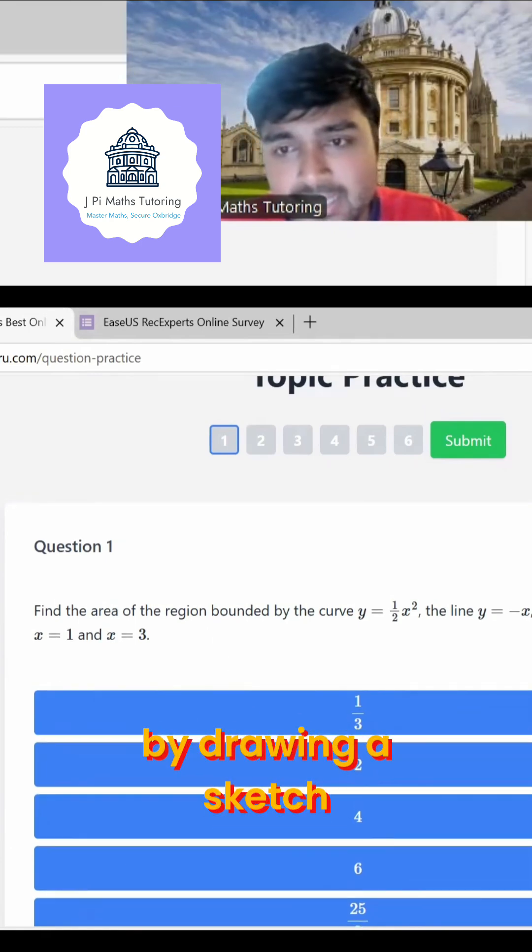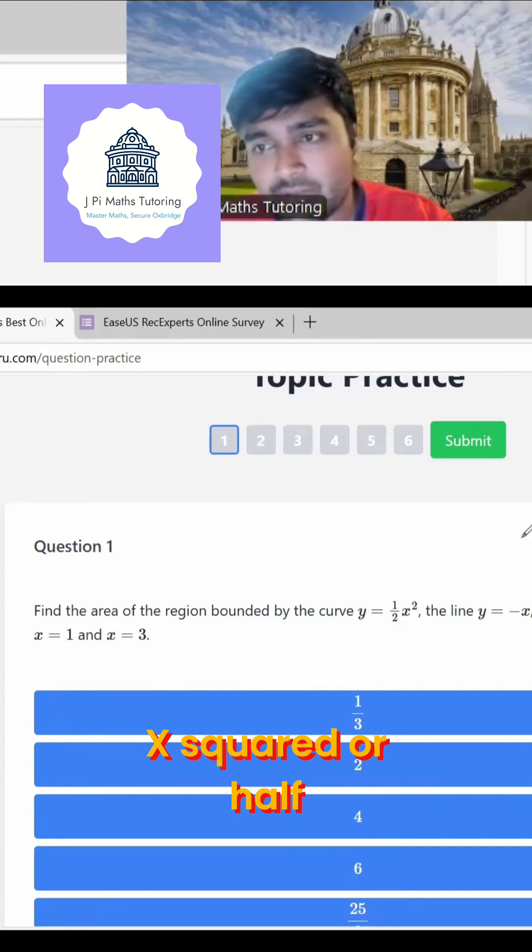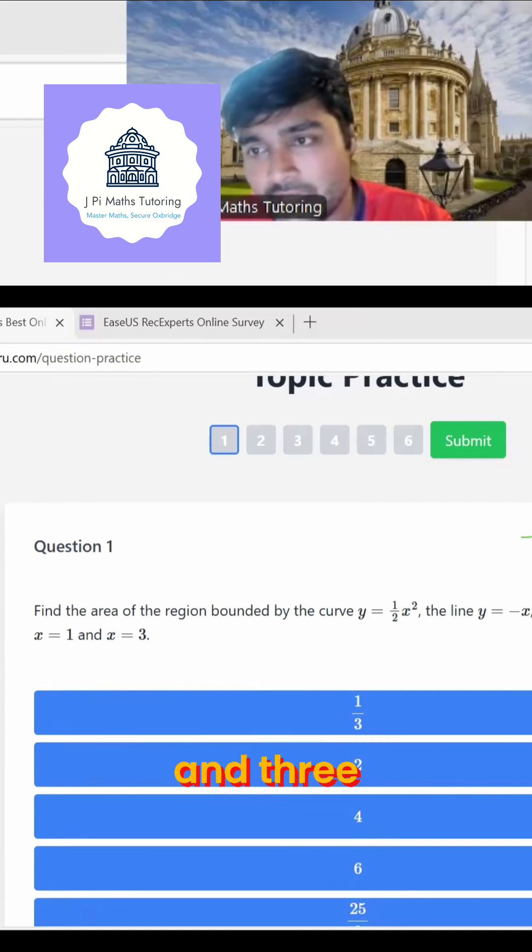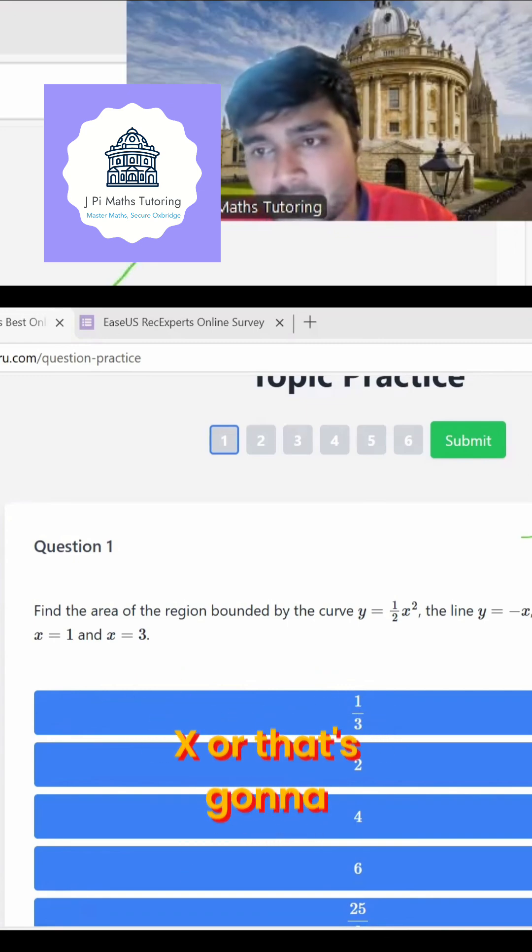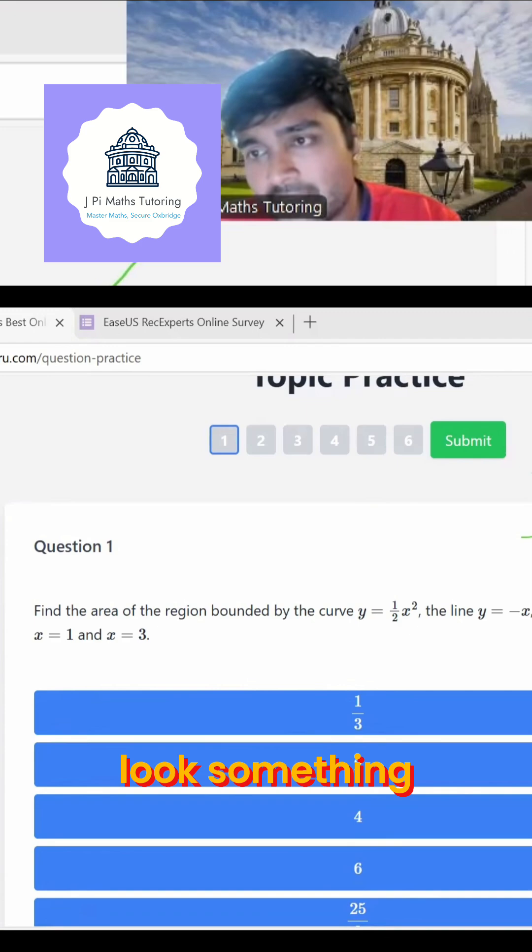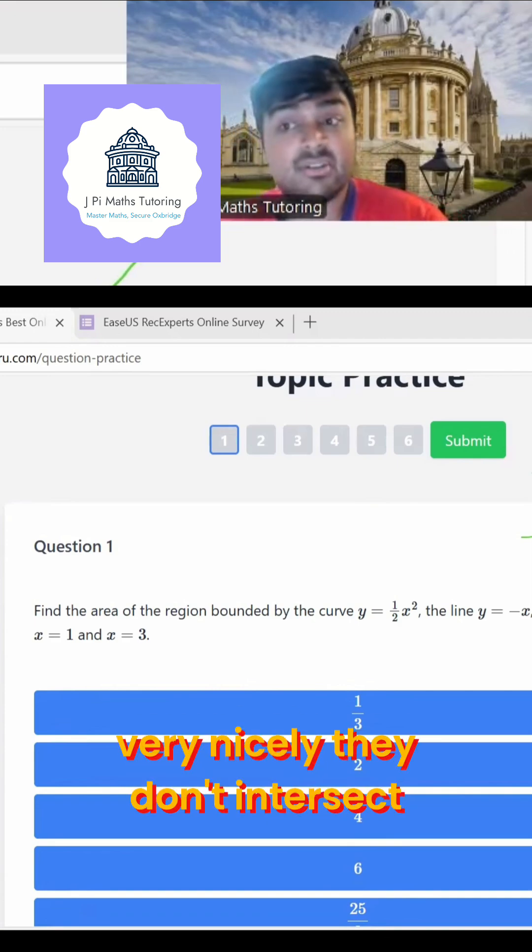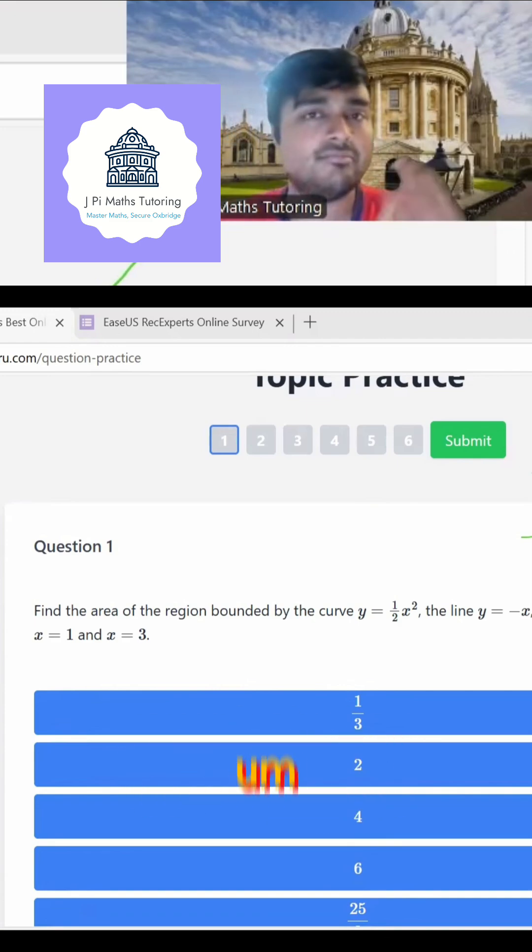I'm going to do this by drawing a sketch. So x squared or half x squared between 1 and 3, if I put that there. So x squared or half x squared will look something like this, parabola. And y equals minus x, well, that's going to look something like that. So I can see very nicely they don't intersect.